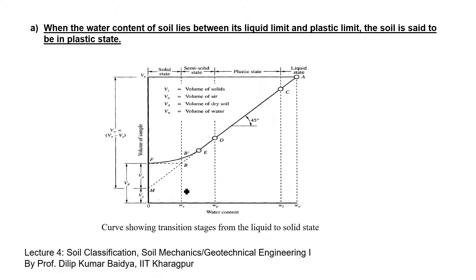Atterberg showed that if the water content of a thick suspension of clay is gradually reduced, the clay-water mixture undergoes changes from a liquid state through a plastic state and finally into a solid state. The water contents corresponding to the transition from one state to another are termed as Atterberg limits. As you can see in this figure, there are 3 limits: shrinkage limit, plastic limit, and liquid limit.